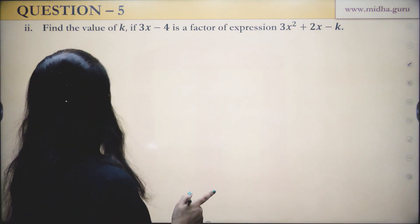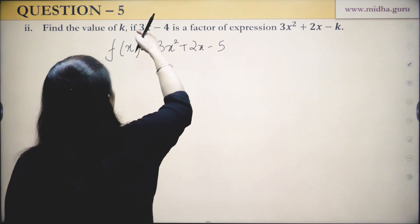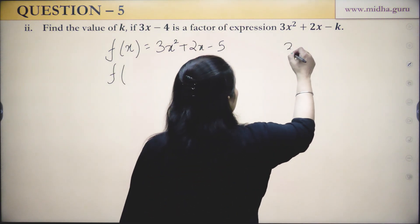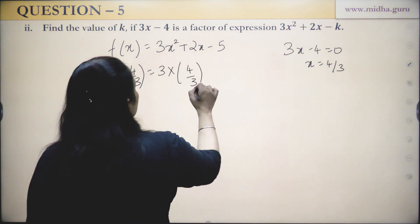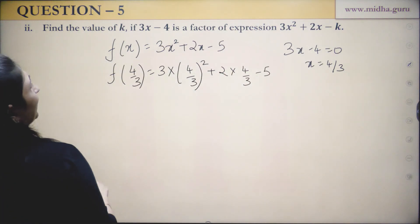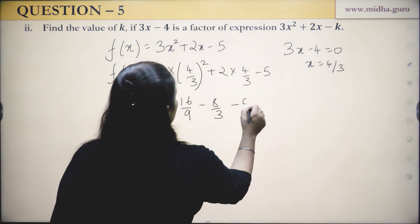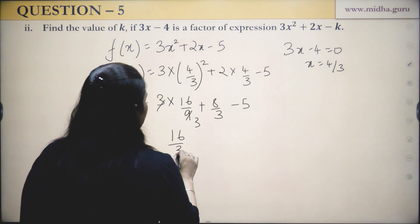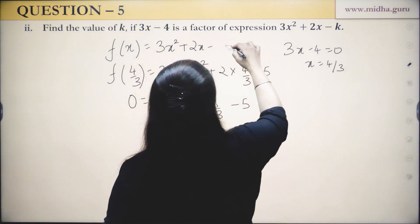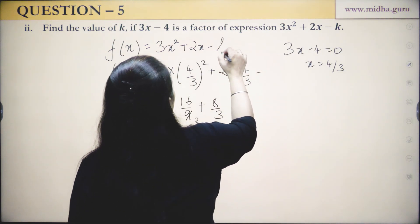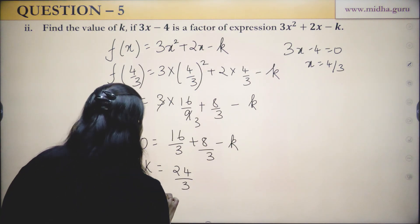Question: Find the value of K if 3X − 4 is a factor of 3x² + 2x − K. Equate 3X − 4 = 0, so X = 4/3. Since it is a factor, f(4/3) = 0. Substituting: 3(16/9) + 2(4/3) − K = 0, giving 16/3 + 8/3 − K = 0, so 24/3 = K, which gives K = 8.